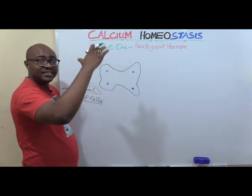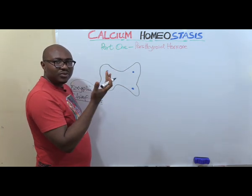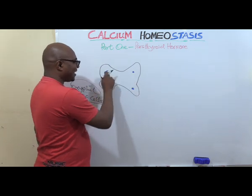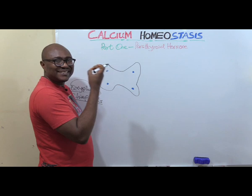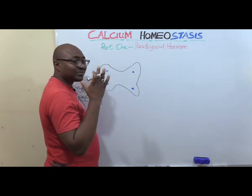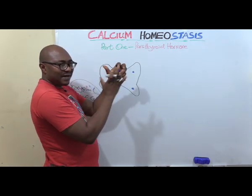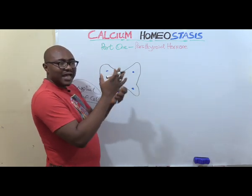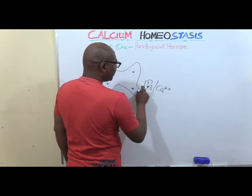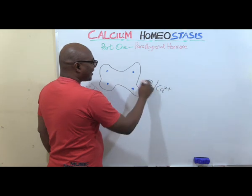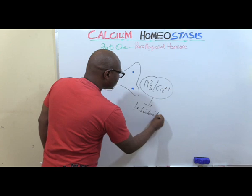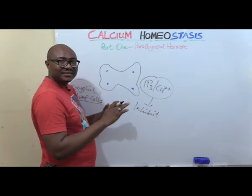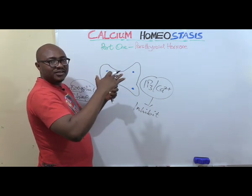When there are increased levels of calcium, parathyroid hormone doesn't need to be secreted. The parathyroid gland cells have calcium-sensing receptors. When calcium is increased, it binds and activates a G protein through the phospholipase mechanism. Then IP3 — inositol triphosphate — is produced, which acts as a second messenger that inhibits the secretion of parathyroid hormone from these cells. When PTH is inhibited, calcium levels can no longer increase and begin to reduce.